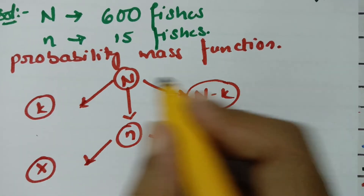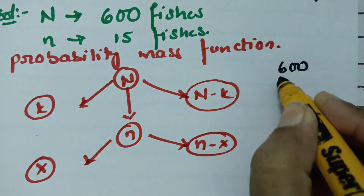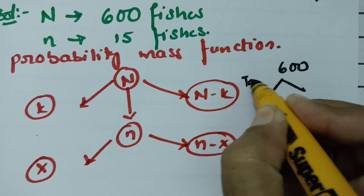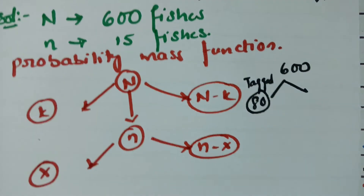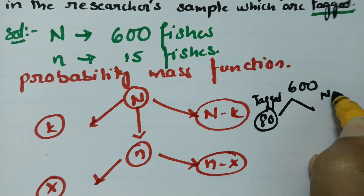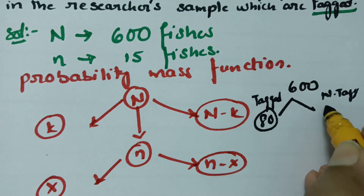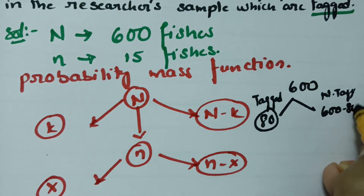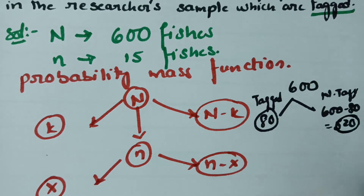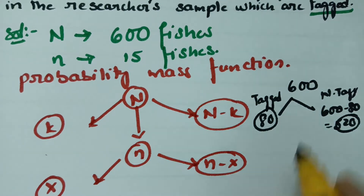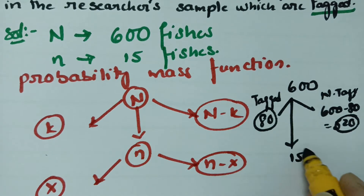Comparing with the formula: capital N is 600 fishes — the total. Out of 600, the tagged fishes k are 80. The non-tagged will be N minus k, that is 600 minus 80, which equals 520. So this value is 520, and among 600 we have to select 15.